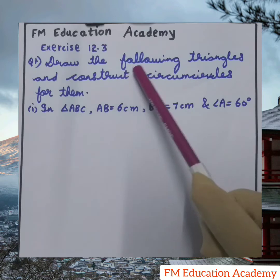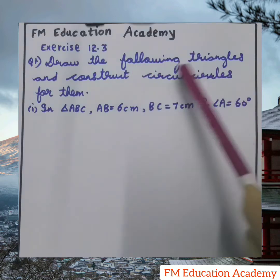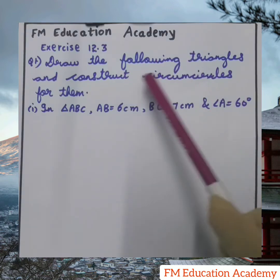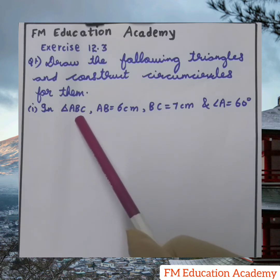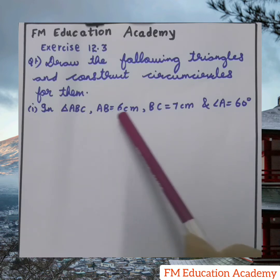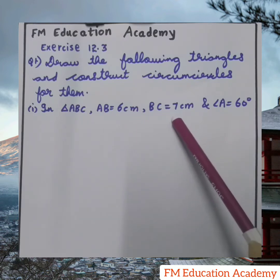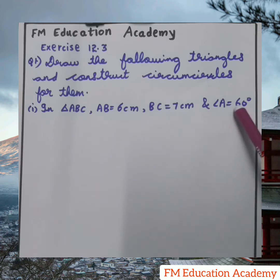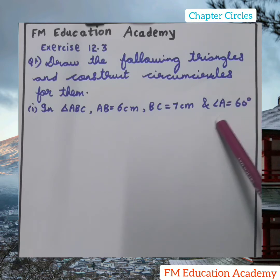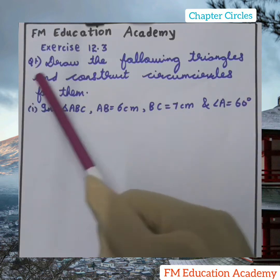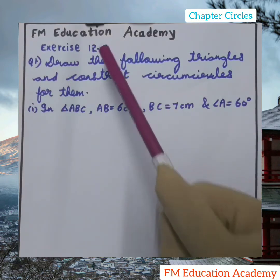Draw the following triangles and construct circumcircles for them. The first part is triangle ABC where AB is equal to 6 cm, BC is equal to 7 cm, and angle A is equal to 60 degrees. This question is taken from the Class 9 TS SCRT textbook, first question, exercise 12.3.